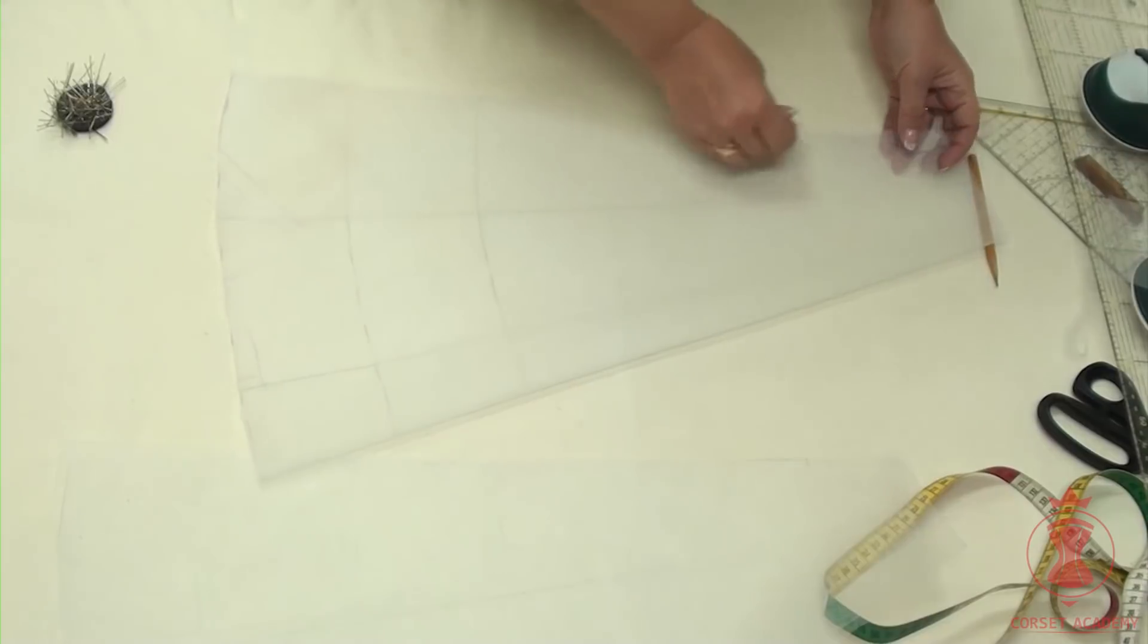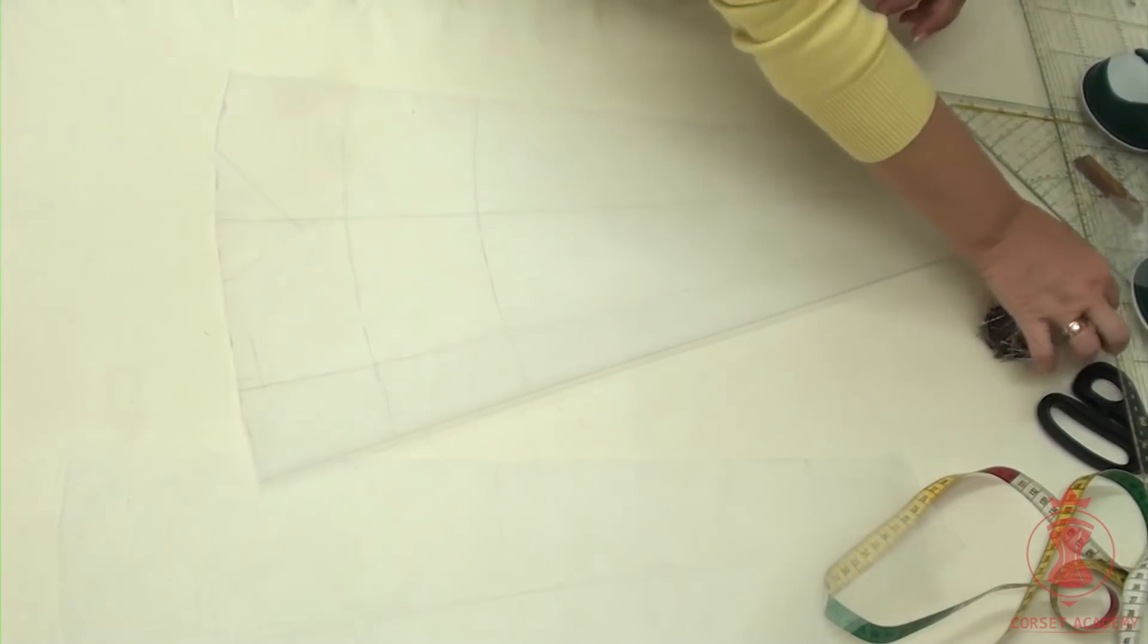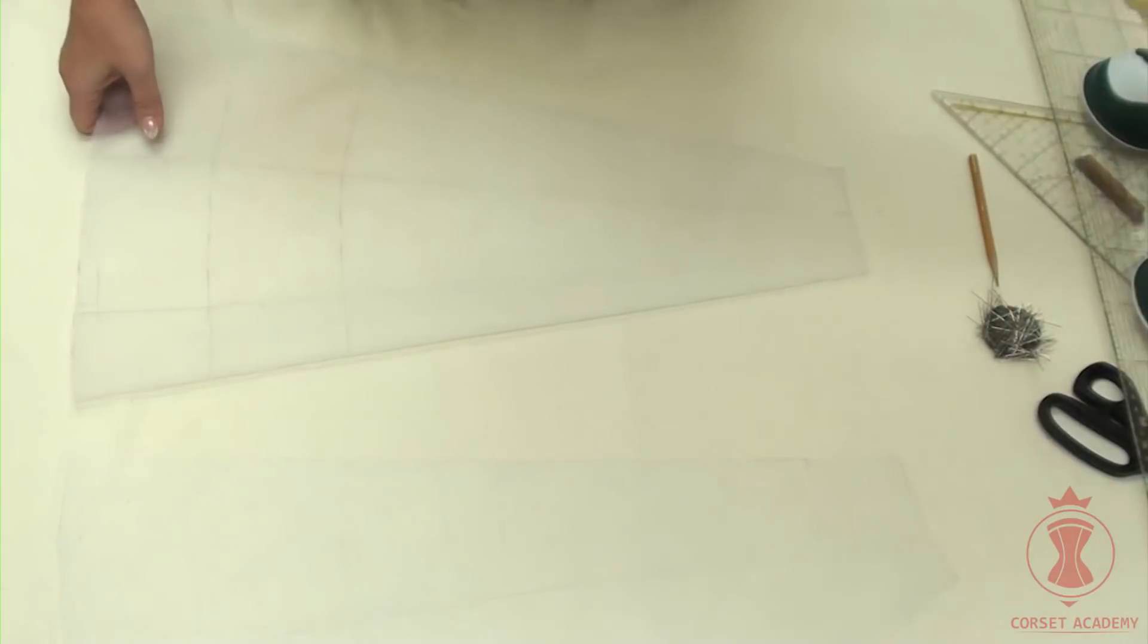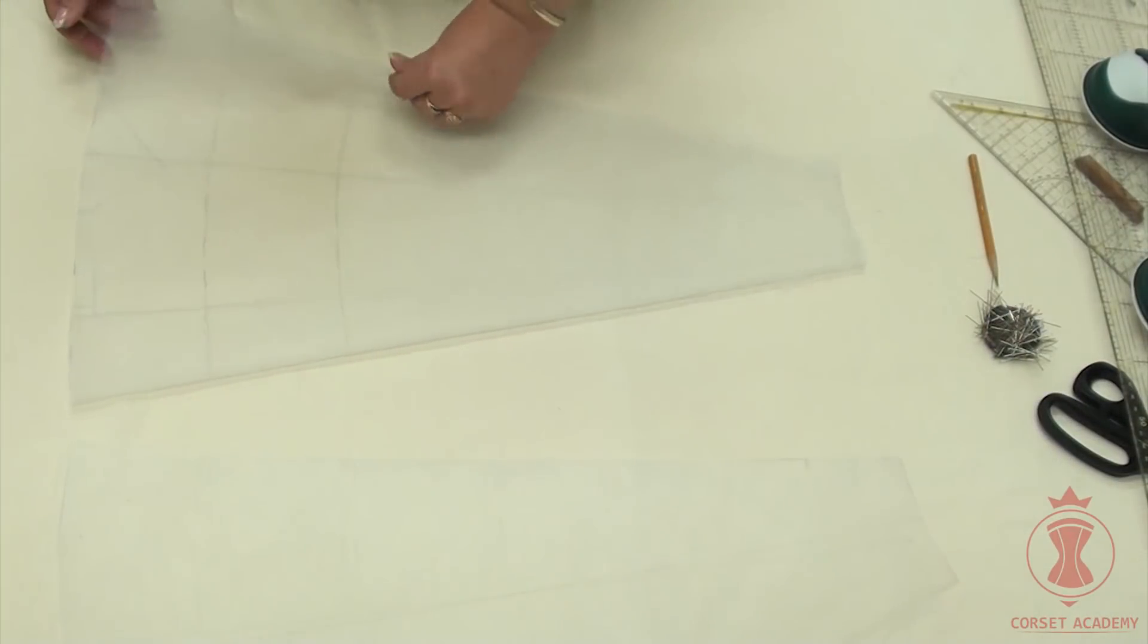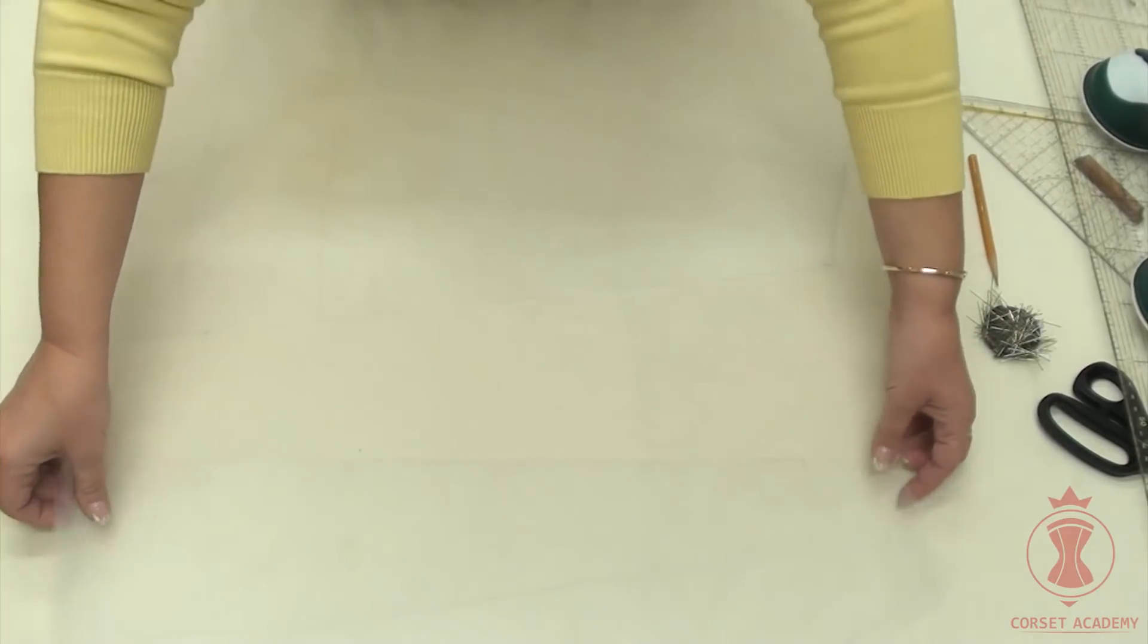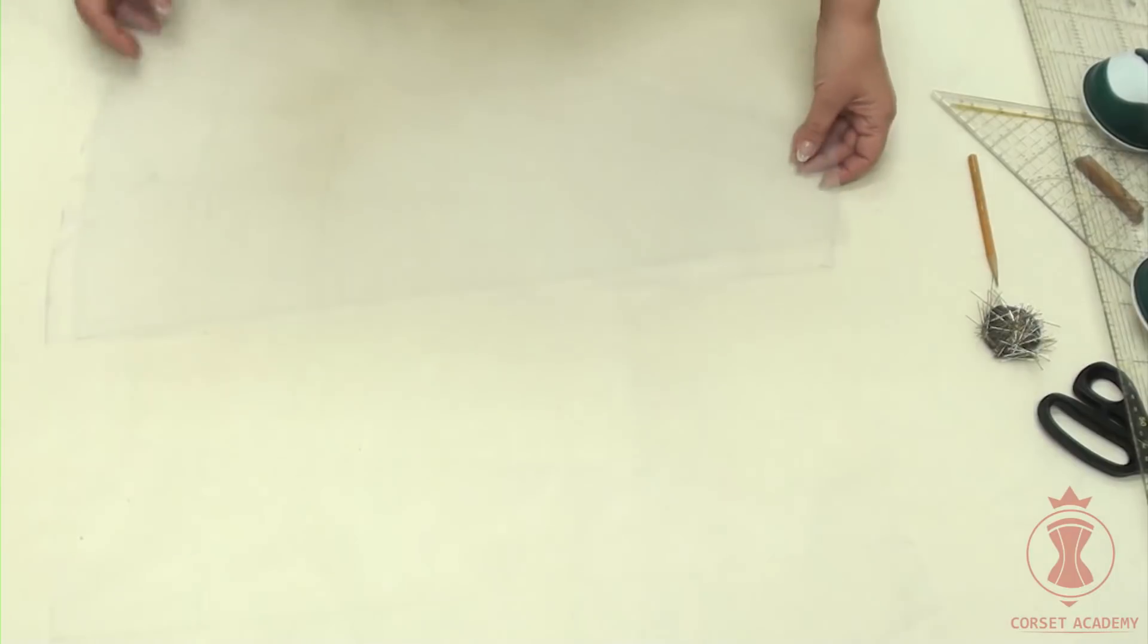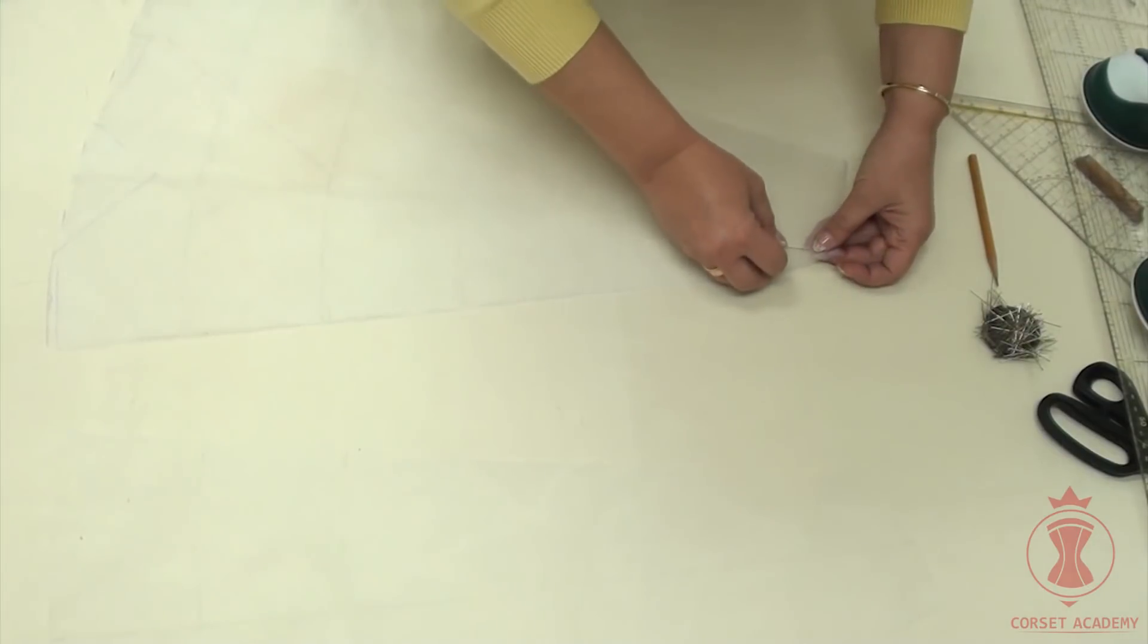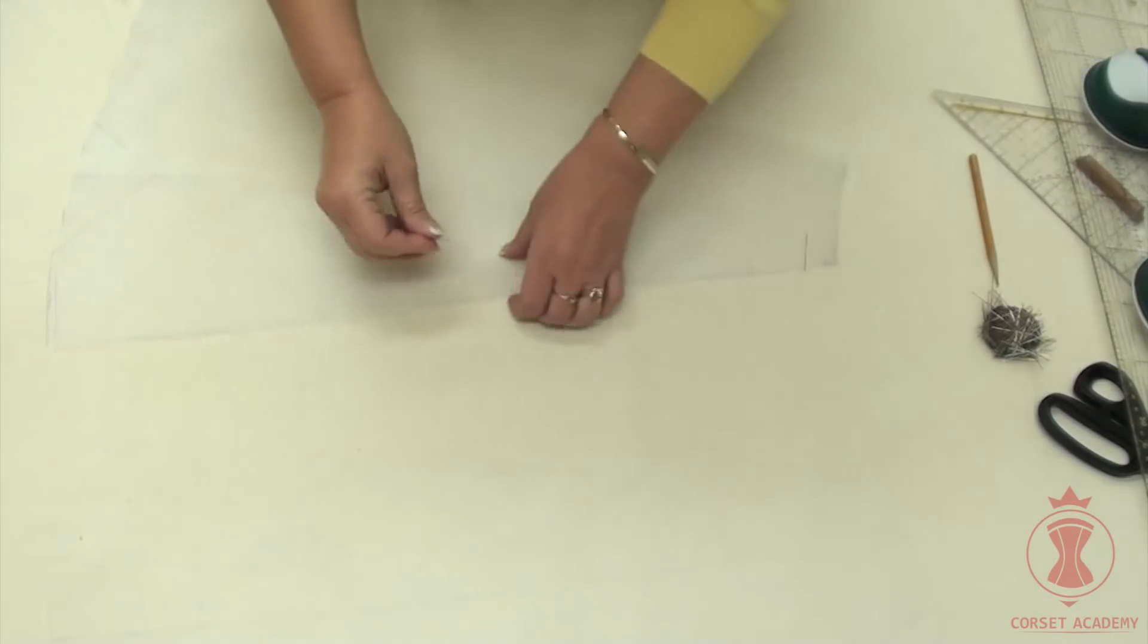I will sew the side seams and add bias tape tunnels for the hoops. I pin the pieces together along the side seam edges.